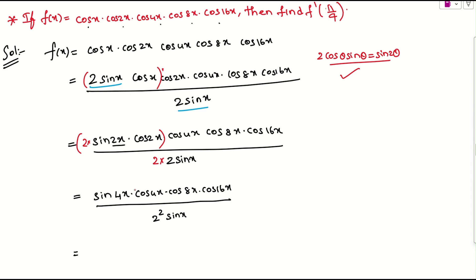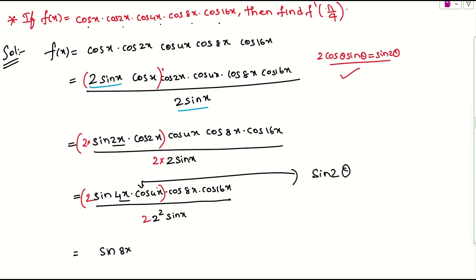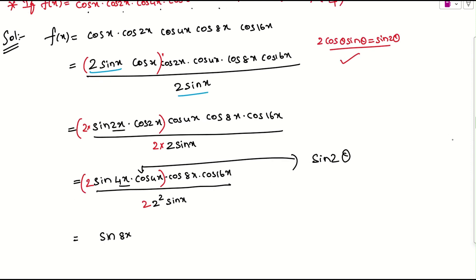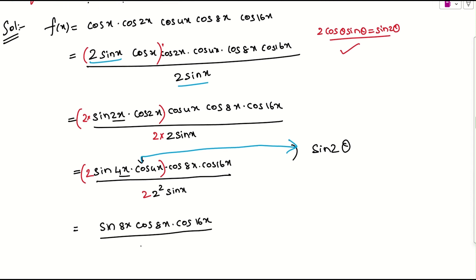Again applying 2 sin a cos a formula: 2 is missing, so multiply by 2 and divide by 2. Taking the first three terms, applying sin 2 theta where theta is 4x gives sin 8x. So we have sin 8x times cos 8x times cos 16x divided by 2 cubed times sin x. Applying once more: sin 2 theta with theta equals 8x gives sin 16x, divided by 2 to the power 4 times sin x.